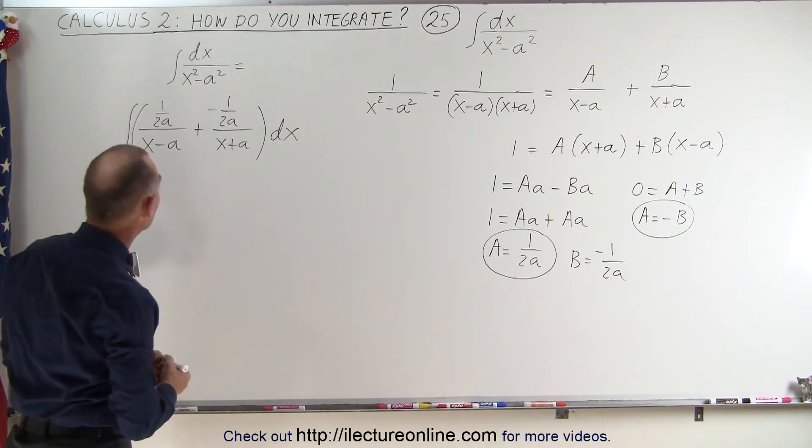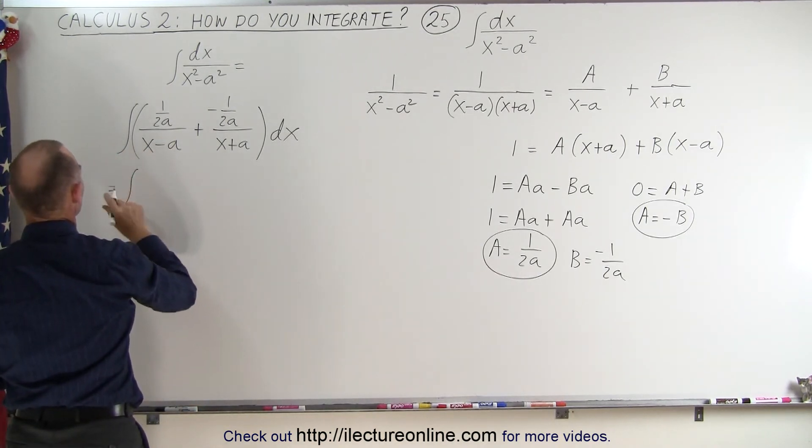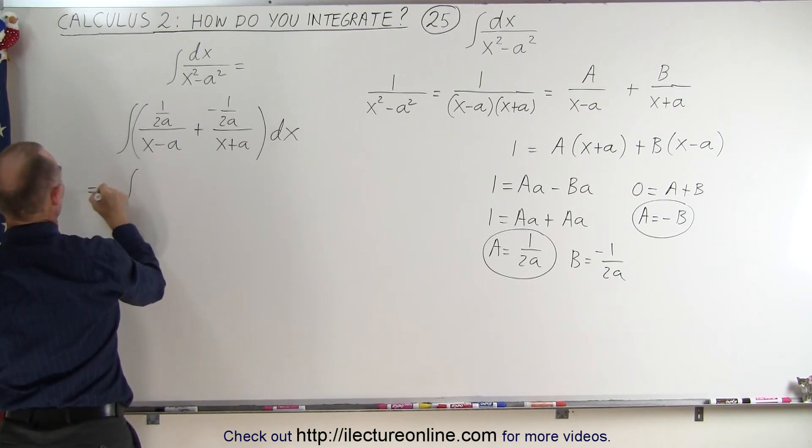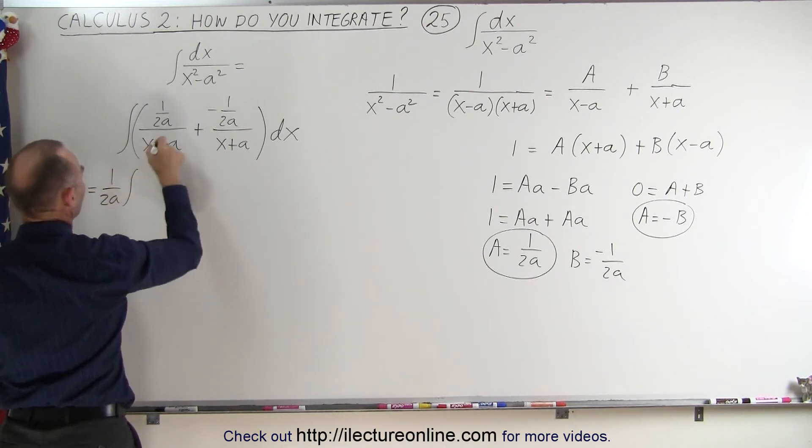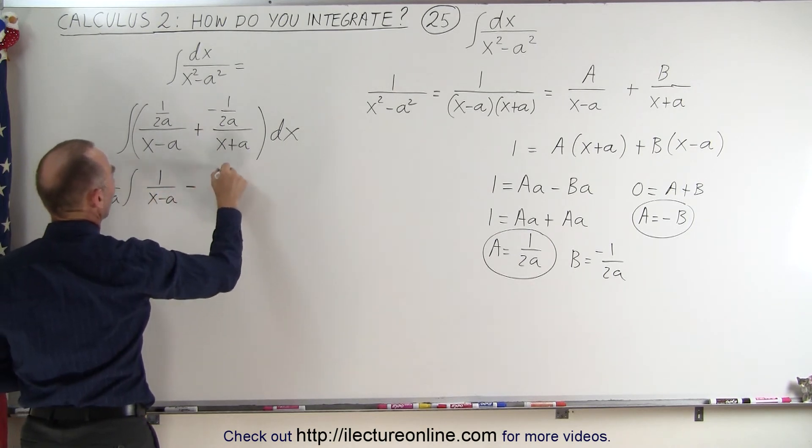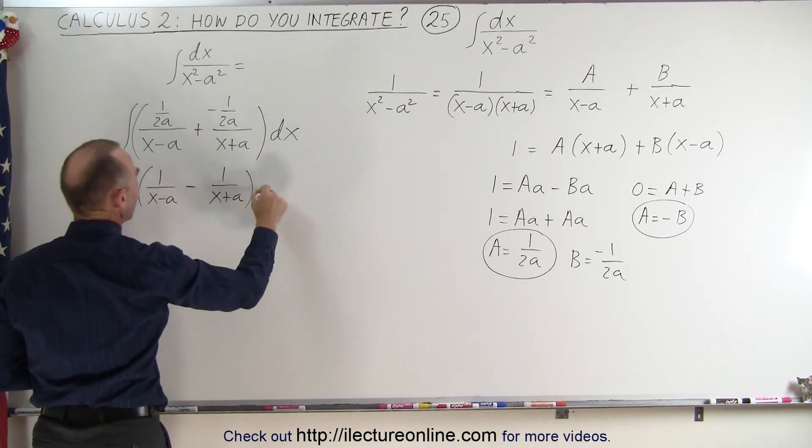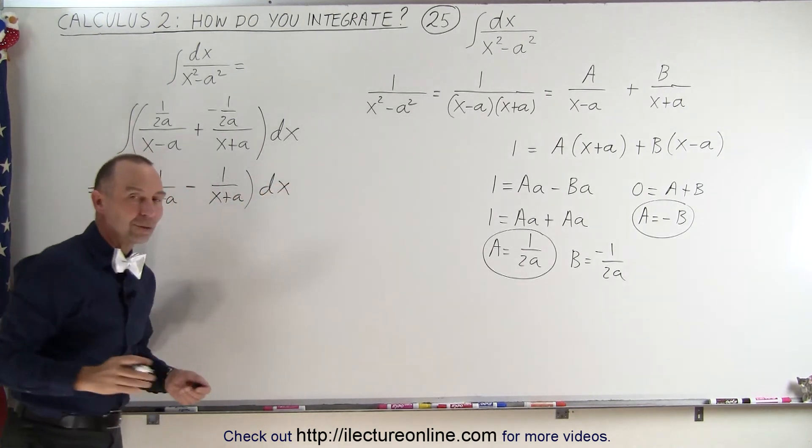Now we can factor out the 1 over 2a, and this can now be written as the integral. I need to factor out 1 over 2a. So now we have 1 over 2a times 1 over x minus a minus 1 over x plus a, times dx, and those are easy integrals to integrate.